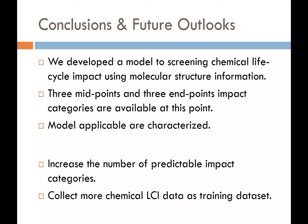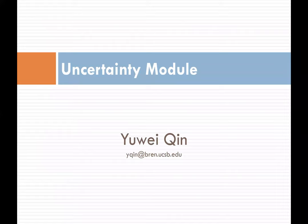In conclusion, we developed a module that can screen chemical life cycle impact using very simple input — molecular descriptors. We currently provide three midpoint and three endpoint impact categories. We also measure the applicability domain to tell users whether their input chemicals fit our model. In the future, we need to increase the number of predictable impact categories beyond the current six, and collect more life cycle inventory data to increase the training data size and improve accuracy. This concludes the predictive life cycle impact assessment module. I now turn to my colleague Yui-Ching, who will talk about the uncertainty module in CLICK.